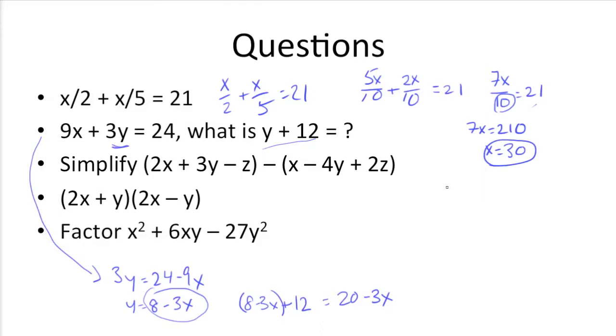Next up, we need to simplify (2x + 3y - z) - (x - 4y + 2z). So the first step we need to do is distribute this negative sign through this term or expression. So we have 2x + 3y - z - x + 4y - 2z.